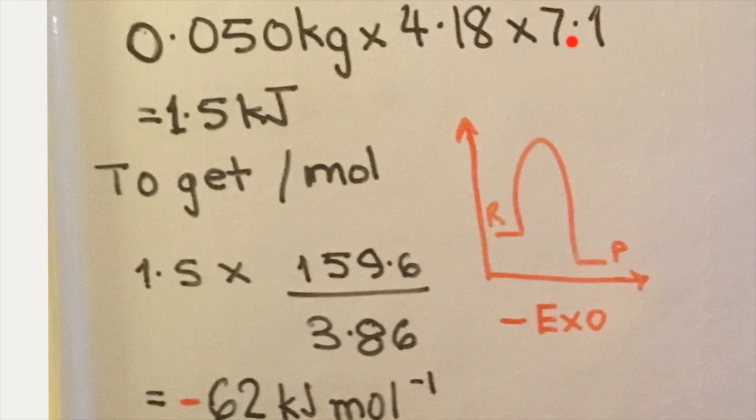Although this value is not given a sign, we will note that at the end, we are going to insert a negative sign to symbolize an exothermic process and a loss of heat energy from the system into the surroundings. So, first we get this value of 1.5 kilojoules based on 3.86 grams of copper sulfate.